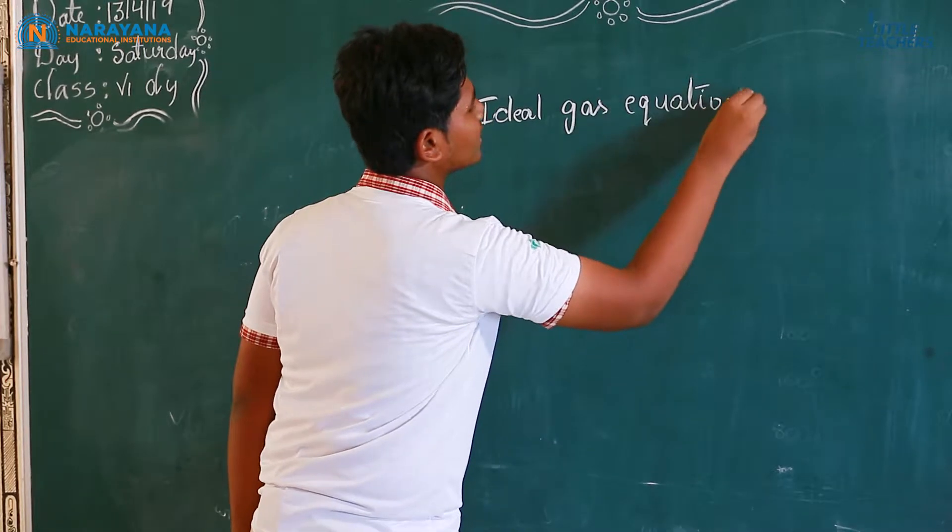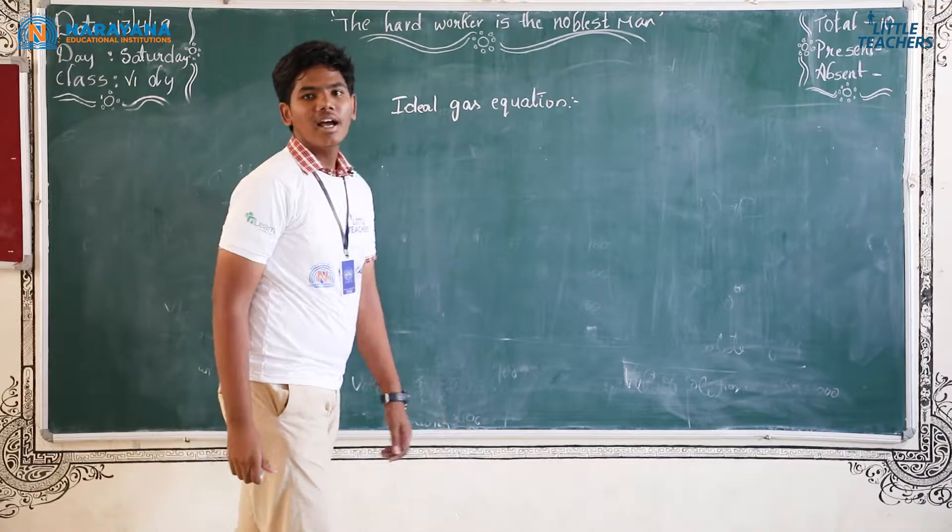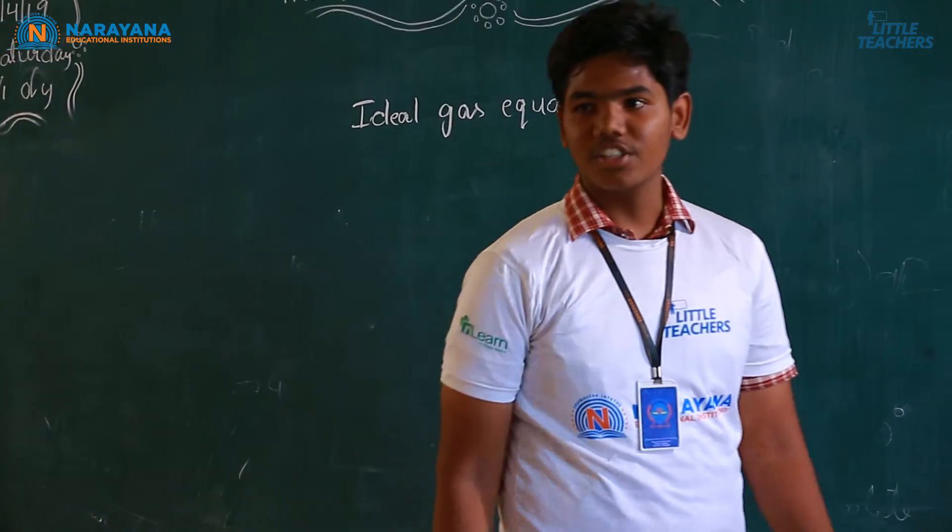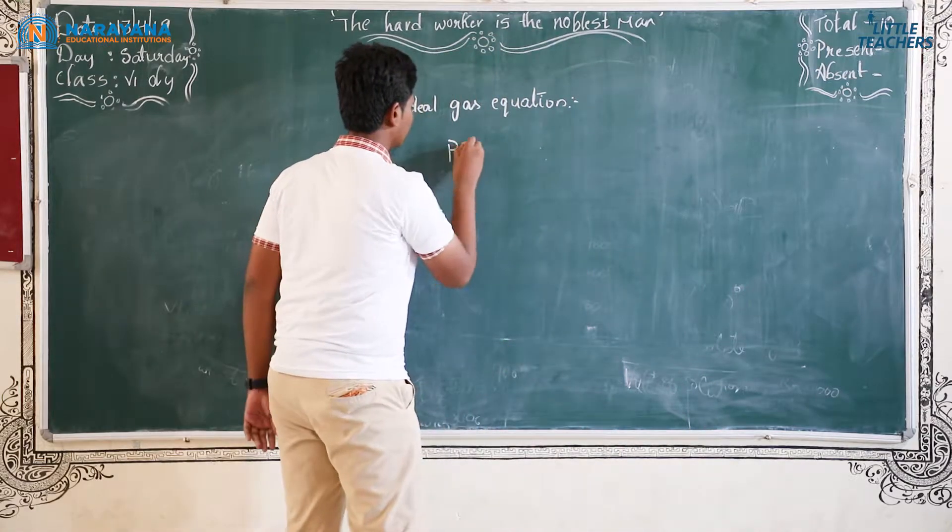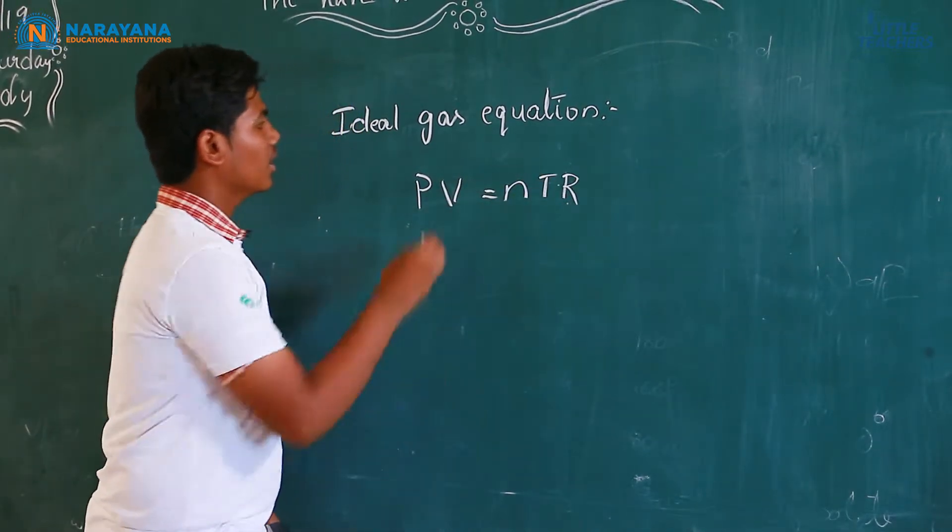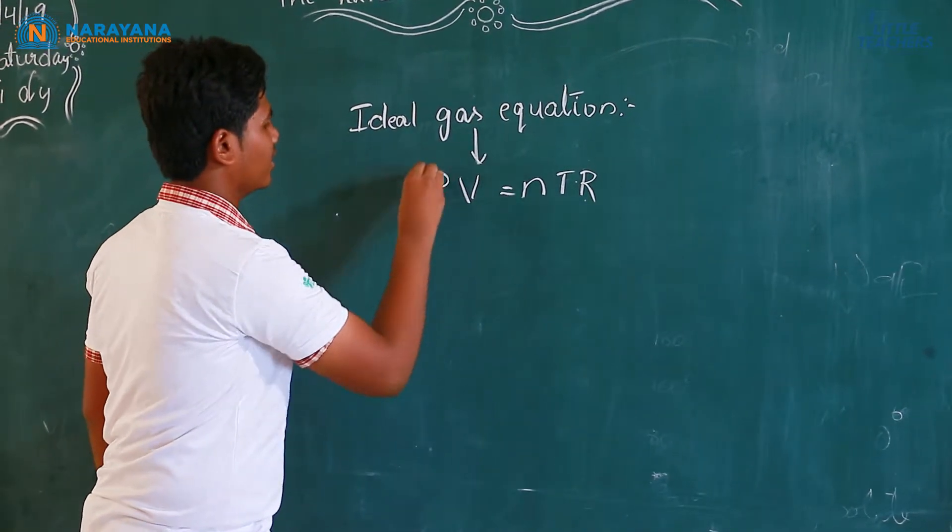This ideal gas equation is also known as ideal gas law or a general gas equation. PV is equals to NTR. This is called ideal gas equation.